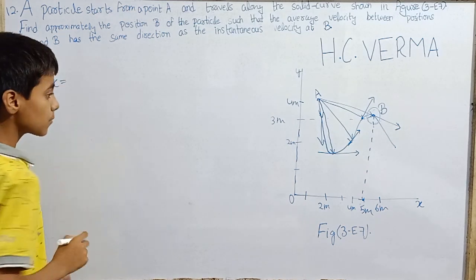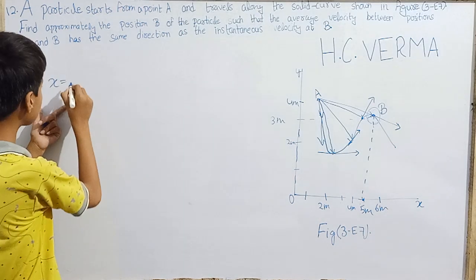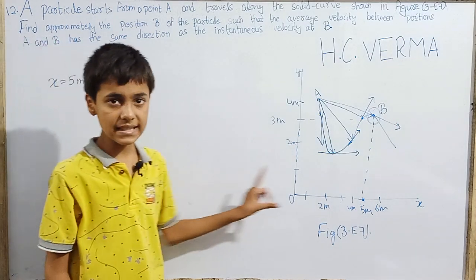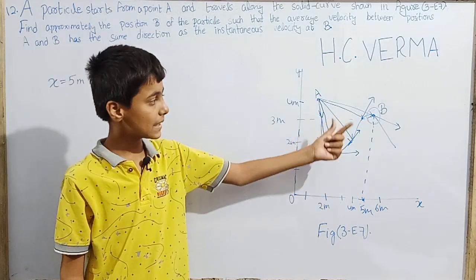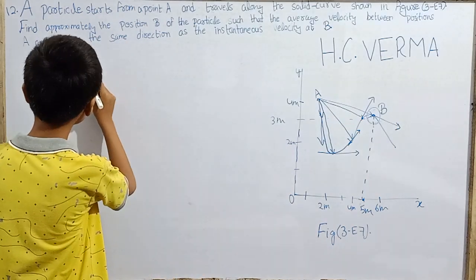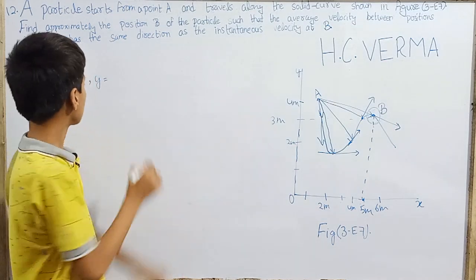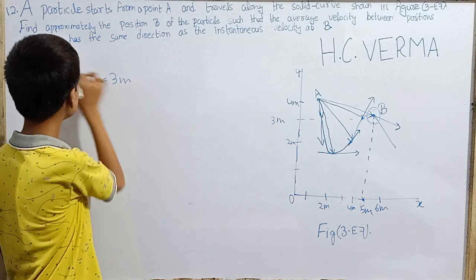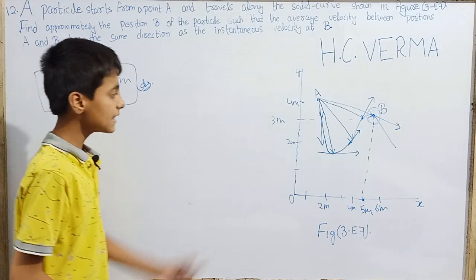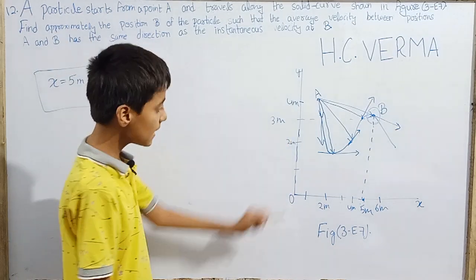According to this, the coordinates of point B are: x-coordinate is 5 meters from the origin, and y-coordinate or height from the origin is 3 meters. So point B is at a height or y-axis separation of 3 meters, and along the x-axis is 5 meters.